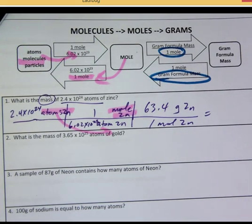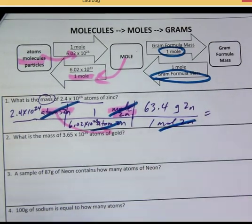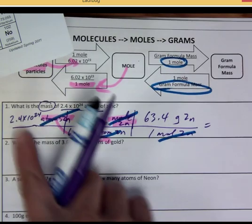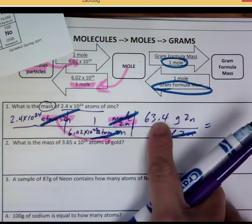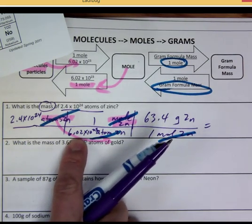All your units here will cancel out, except for that last one, grams of zinc. So multiply the top. 2.4 times 10 to the 24th times 63.4. Divide by 6.02 times 10 to the 23rd.